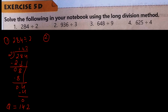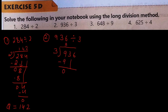Number 2: 936 divided by 3. 3×3=9, minus 0 here. Bring down 3: 3×1=3, here 0. Bring down 6: 3×2=6, minus 0. So Q is equal to 312.